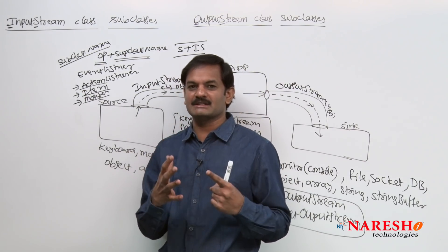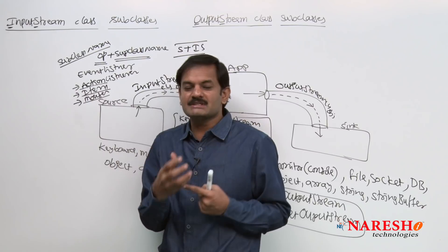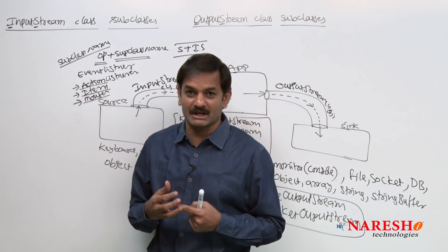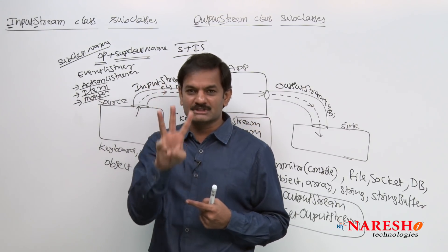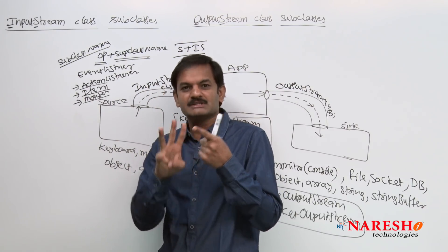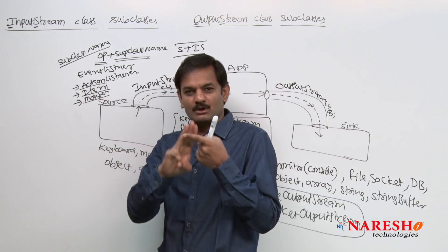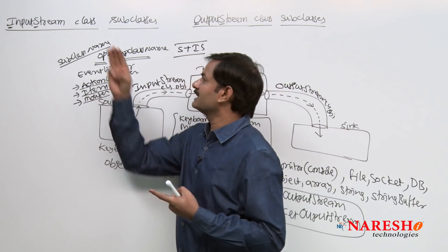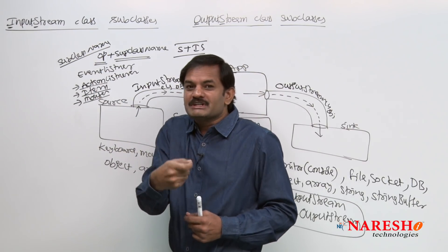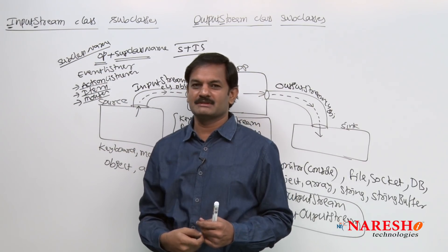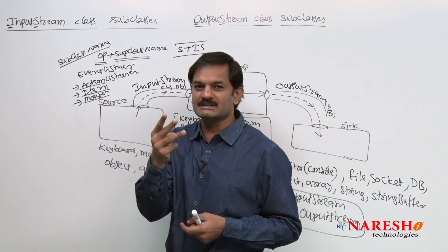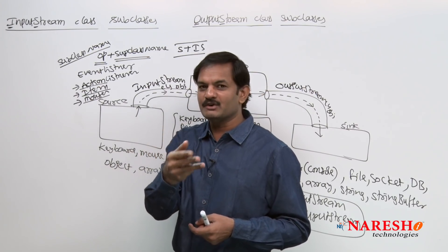Here we have six classes. Among these six classes, if you want to create a super class, we will use three classes. What are they? Interface, abstract class, concrete class. Then tell me — input stream class is which type of class? Is it an interface, abstract class, or concrete class?